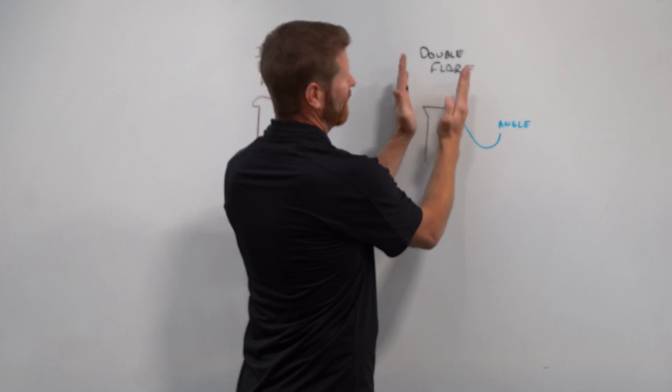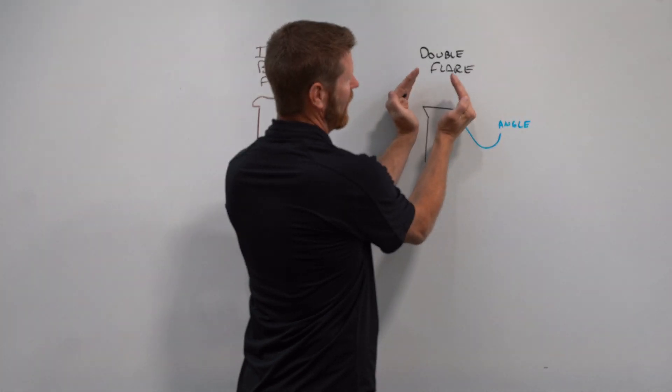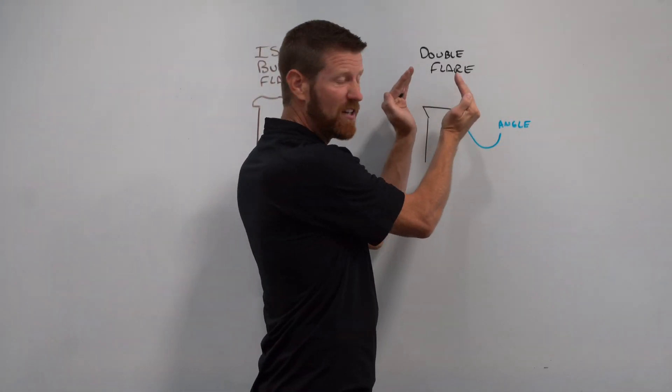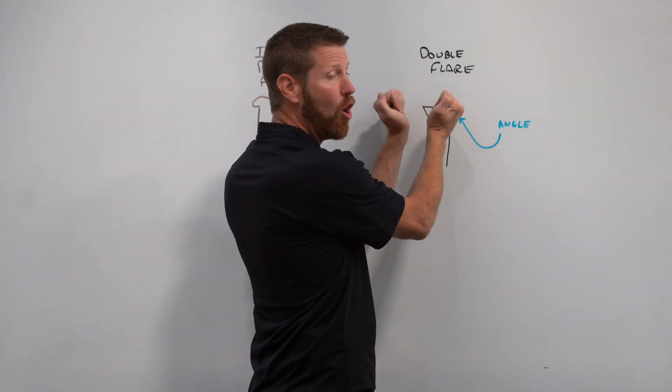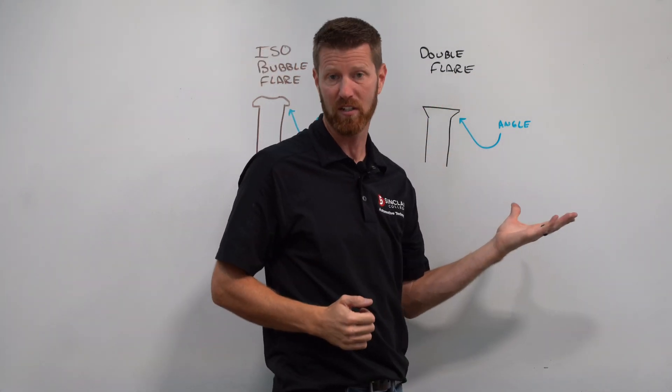What that means is we're going to take the line and kind of bend or squish the end of the line down. And then we're going to fold these ears in over itself so it's actually doubled.